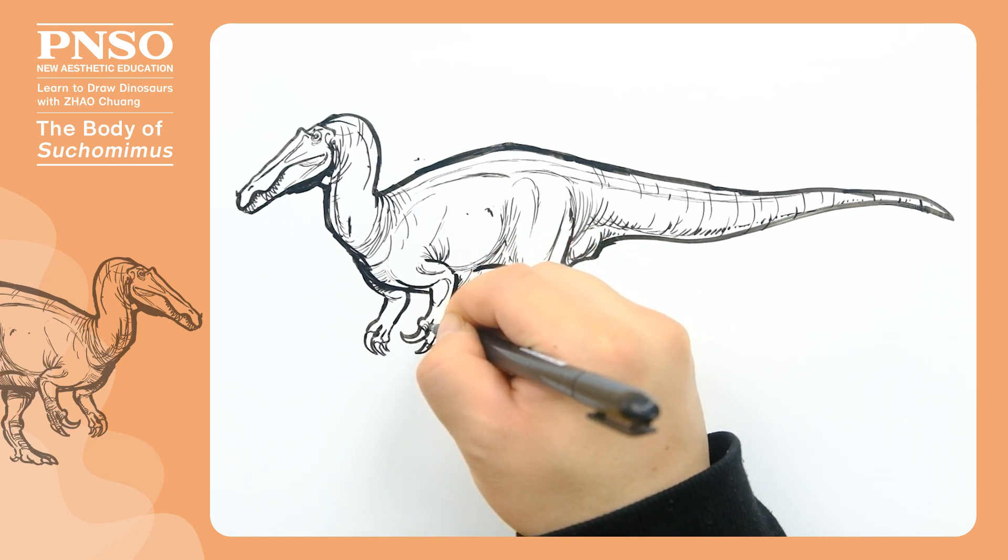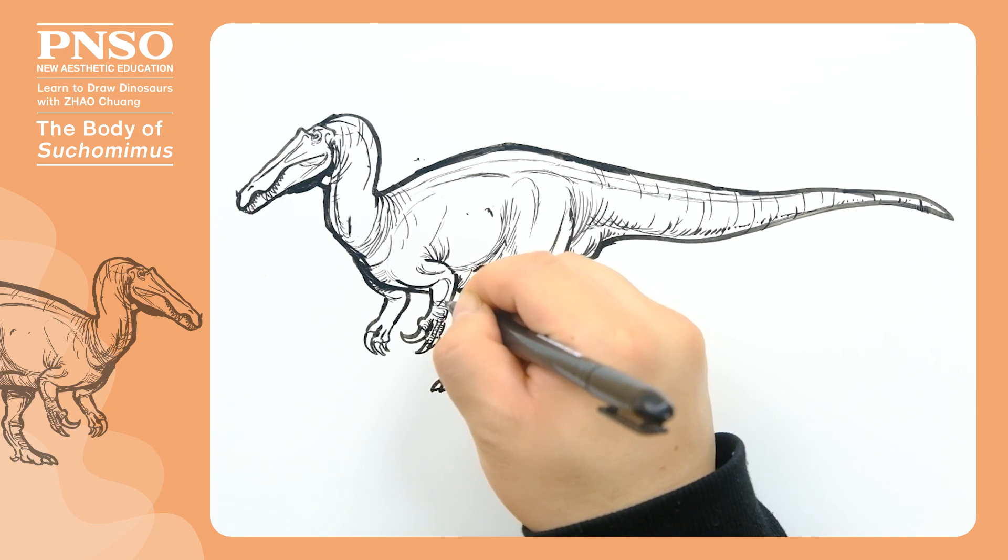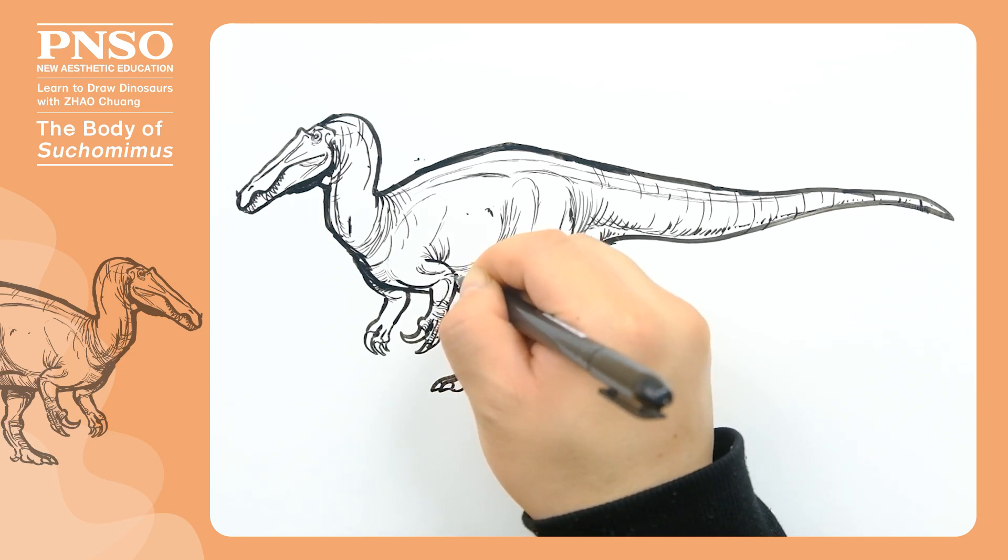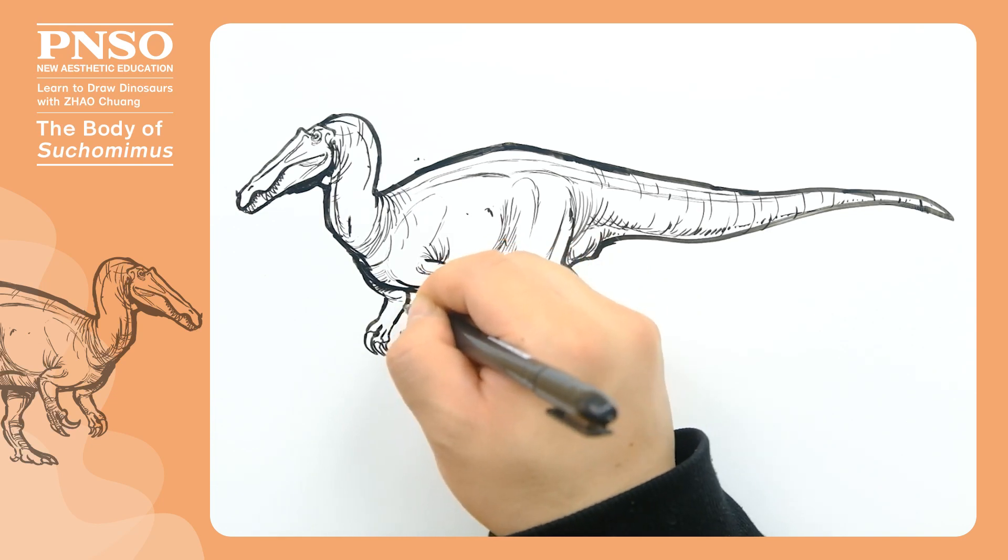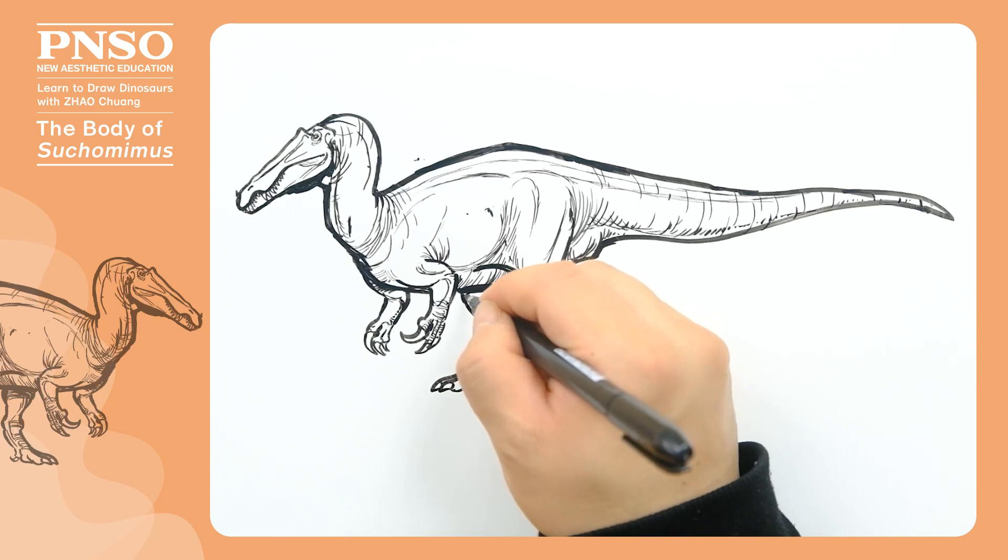Draw some keratinous sheaths on the dorsal side of the claws, and some shadows on the inside of the limbs.